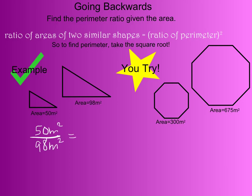Now I'm going to take the square root of this ratio, which gives me 5 meters over 7 meters.